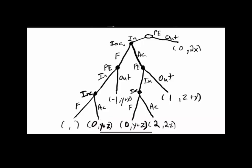Finally, potential entrant in, incumbent fights; potential entrant in, incumbent fights. The potential entrant loses a dollar both periods, so negative two. The incumbent gets Y each time they fight when the potential entrant is in, so it's 2Y. And here you have the fully drawn out game tree.